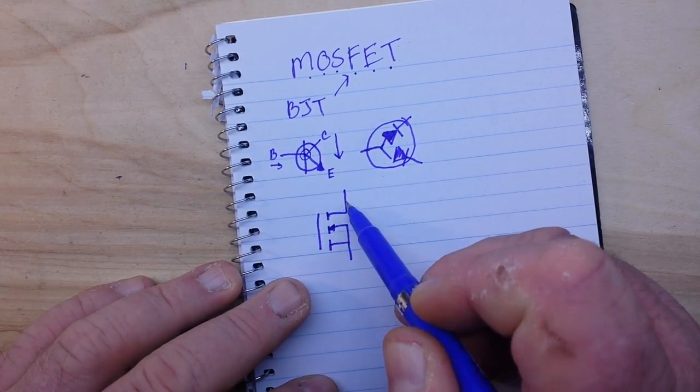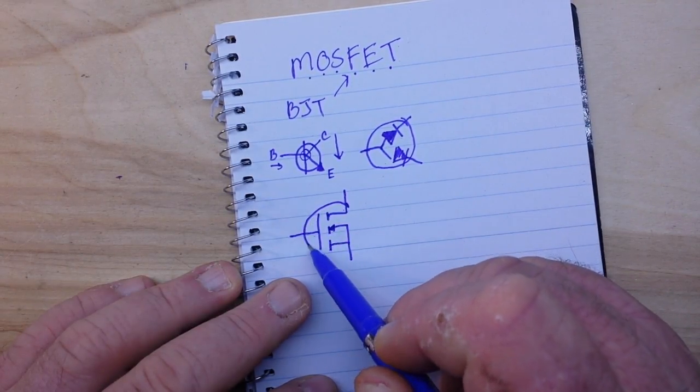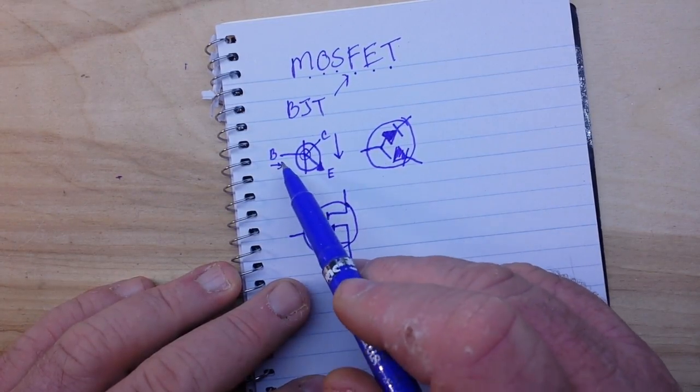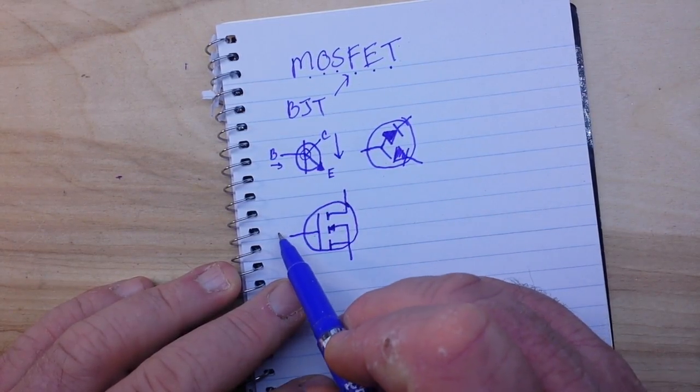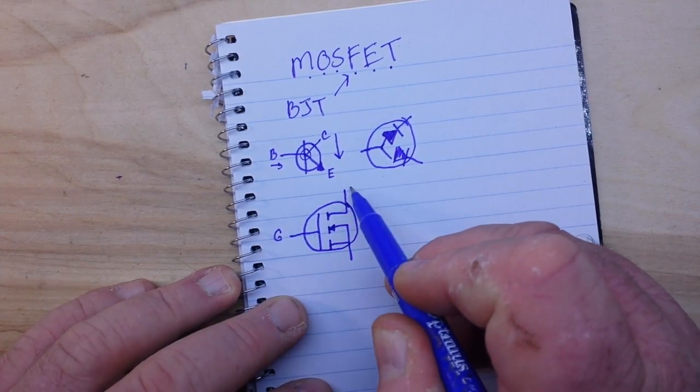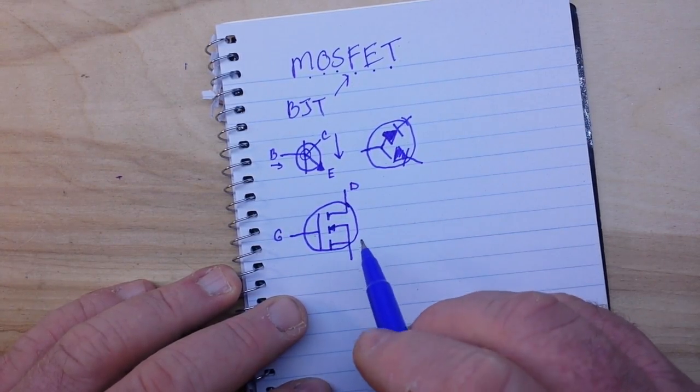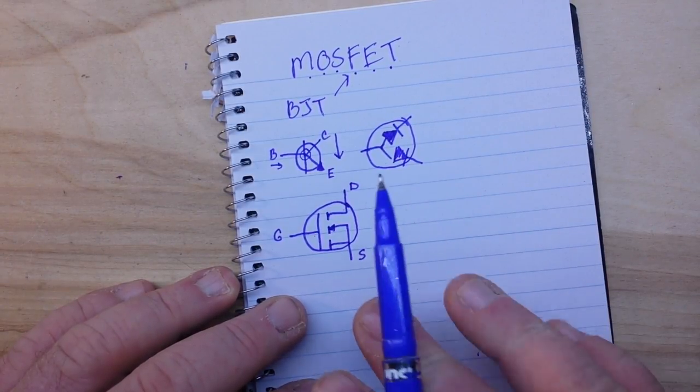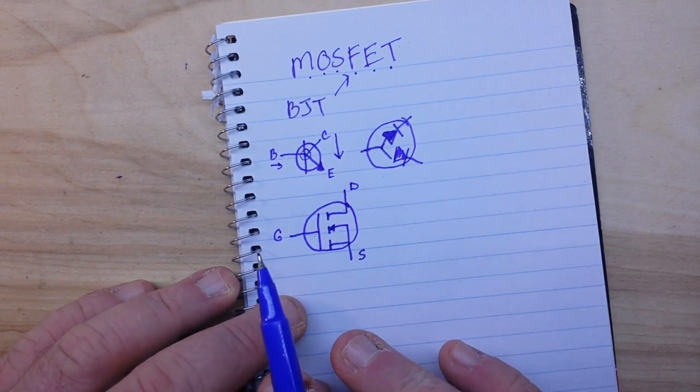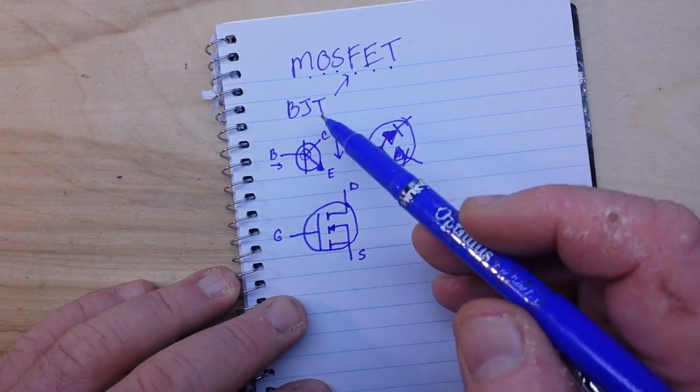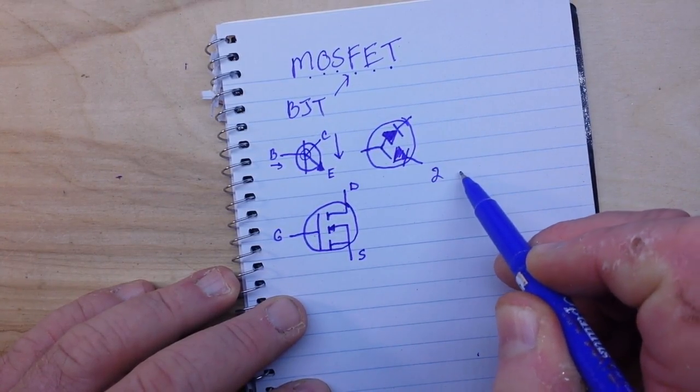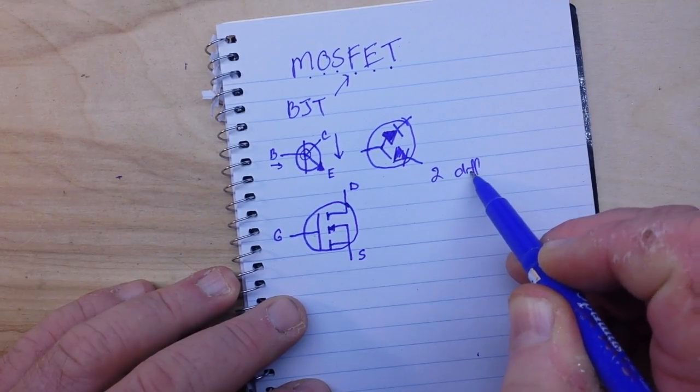Okay, now instead of base, collector, and emitter, we have gate, drain, and source. Now the two major differences between the BJT and MOSFET are these. Let's write this down: two differences.